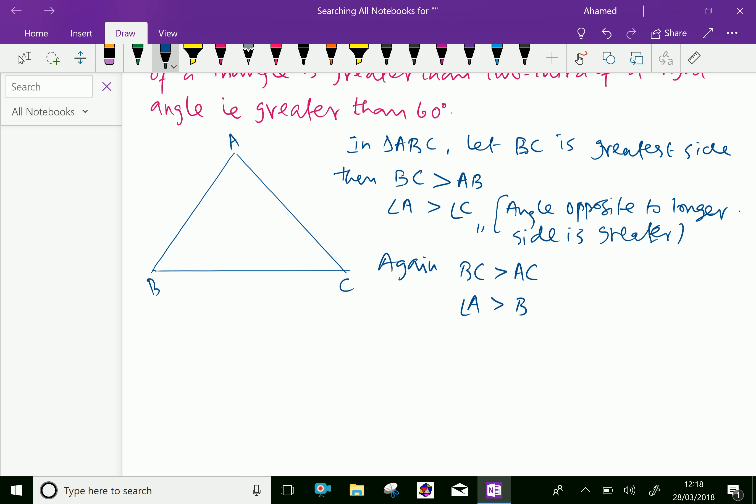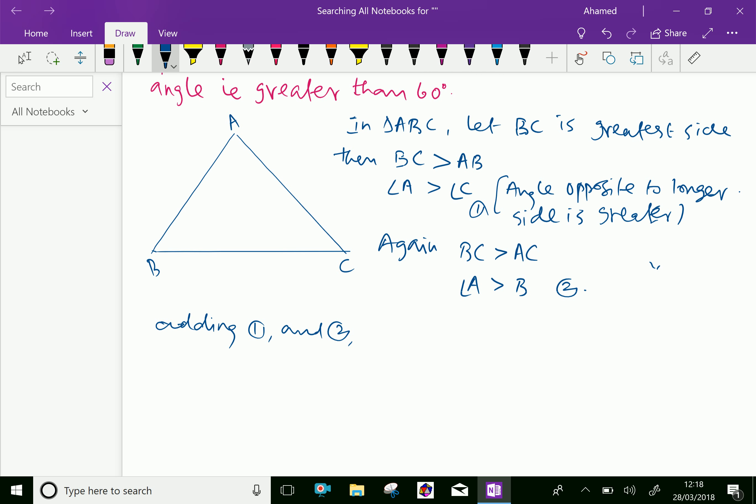Let's call this equation one and this equation two, using the same reason that the angle opposite to the longer side is greater. Therefore, adding equations one and two, we get 2 times angle A is greater than angle B plus angle C.